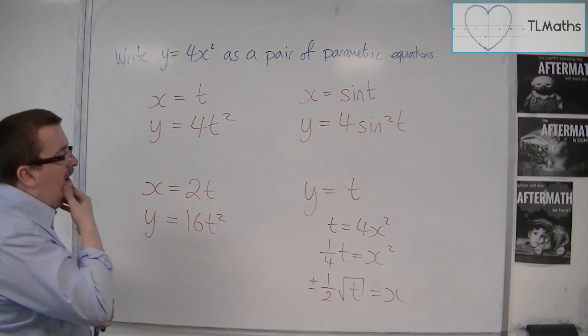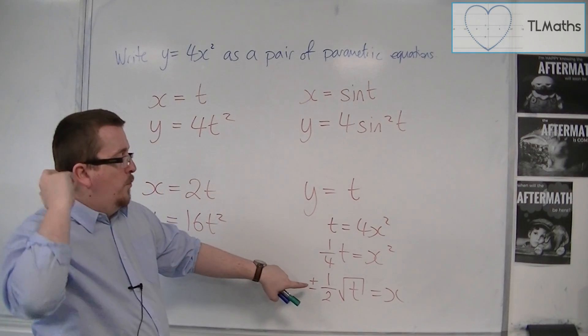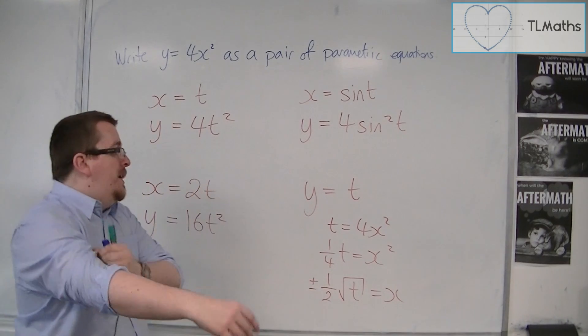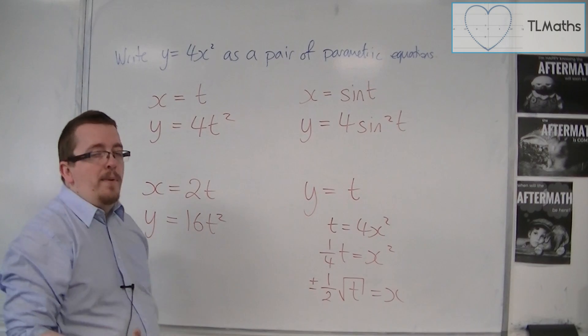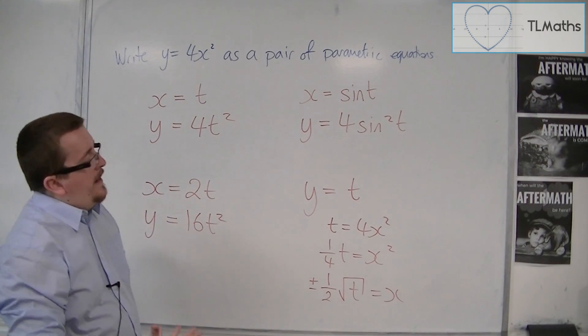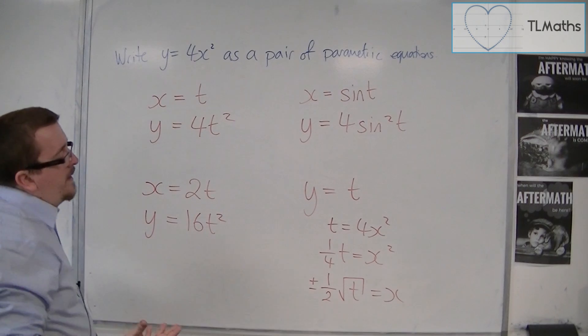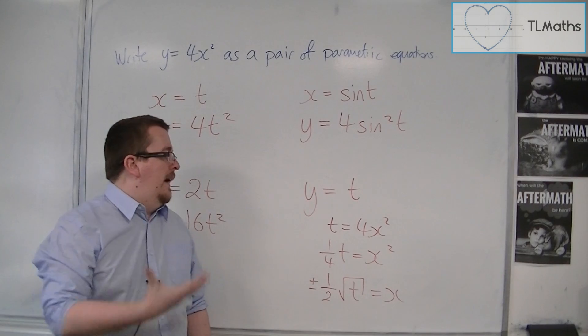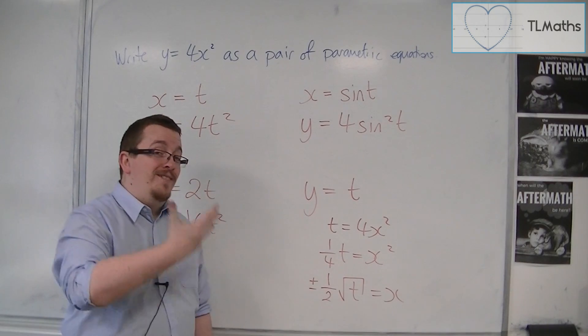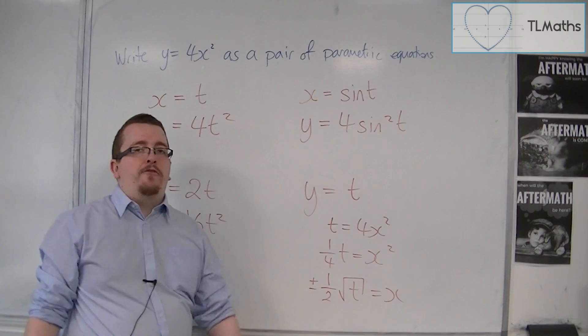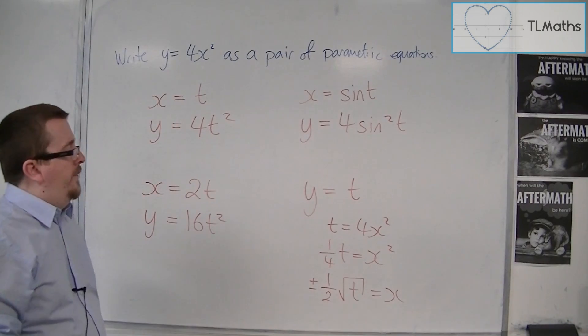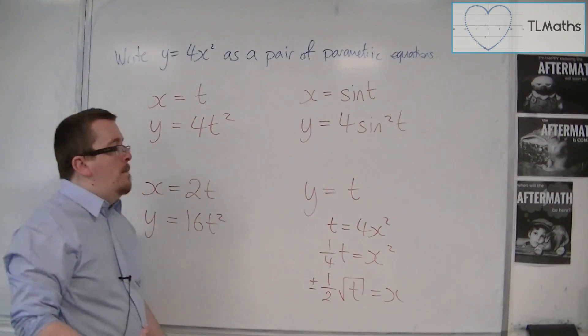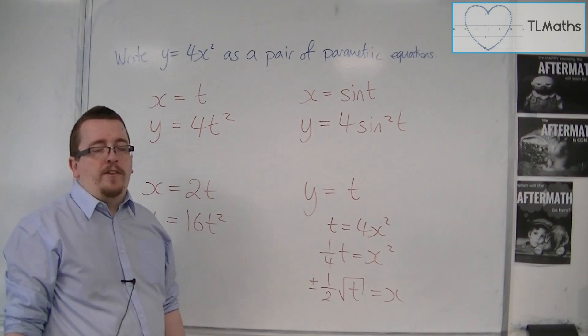Now I would advise with parametric equations to avoid square rooting. Avoid anything that is going to bring about a plus minus. The reason being is that it makes it a lot harder to work with, and it also doesn't look very nice. We're not just doing it for aesthetic reasons, but I would avoid it. So any of these three were much better than this last fourth example.